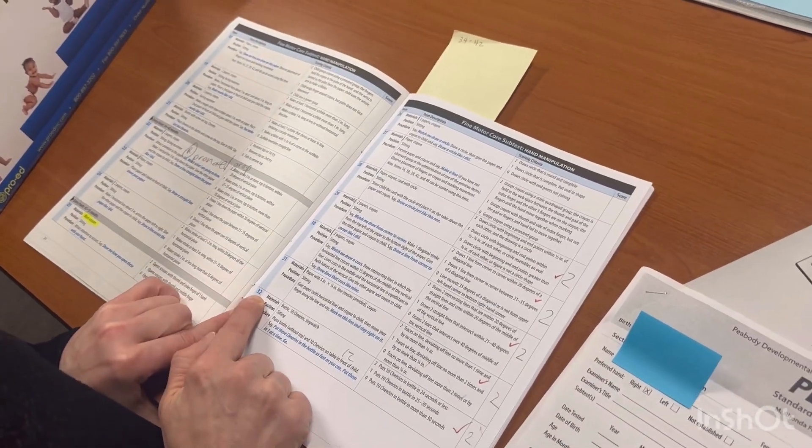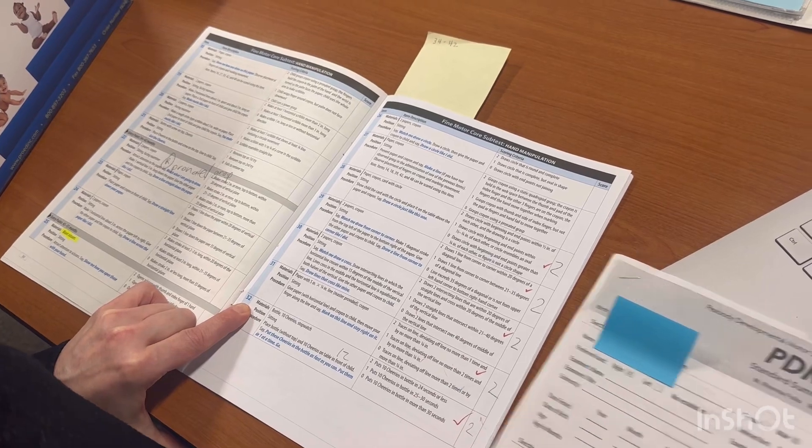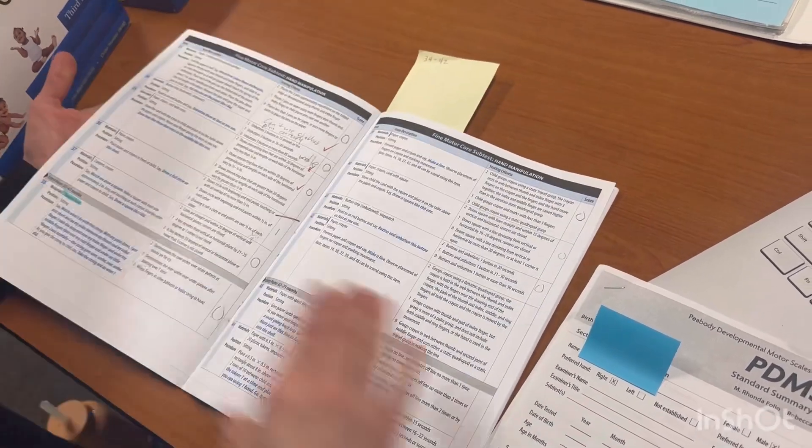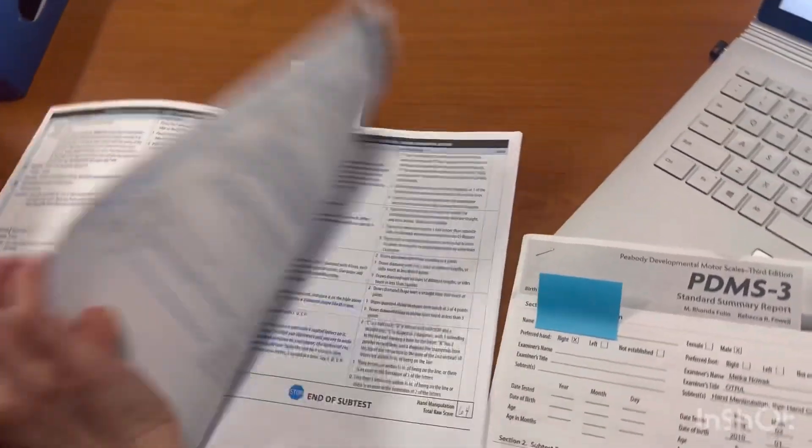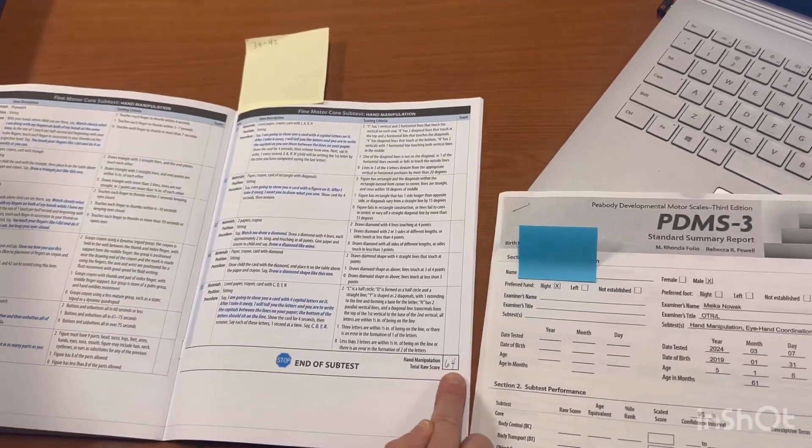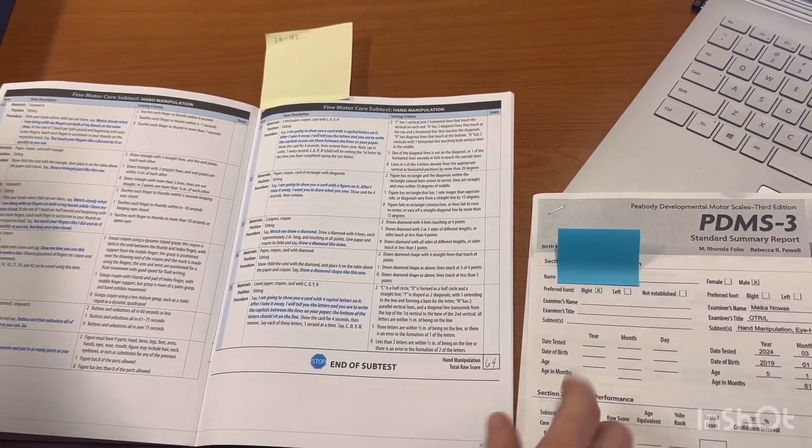And you do 32 test items times 2 is 64. That's your total, and you put it at the end, right here, end of subtest for hand manipulation raw score.